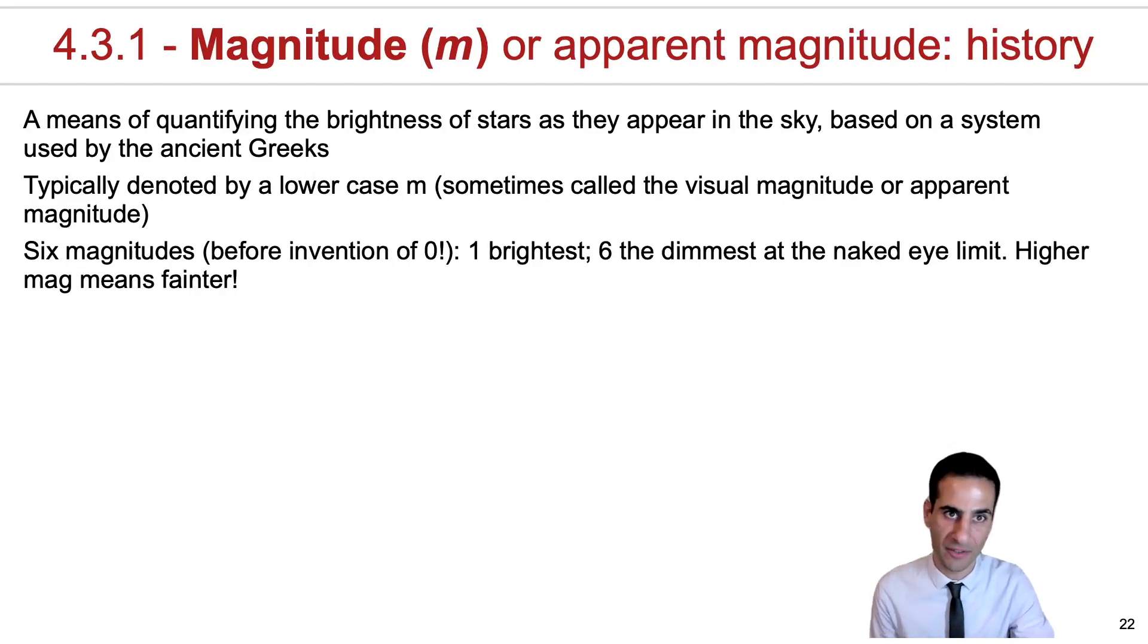Now, before we properly define what a magnitude is, or an apparent magnitude, it's good to have a look at the history of how this concept came about. Basically, it was a means to which the ancient Greeks assign classification to a star in terms of its apparent brightness.